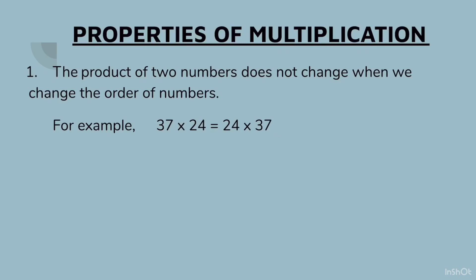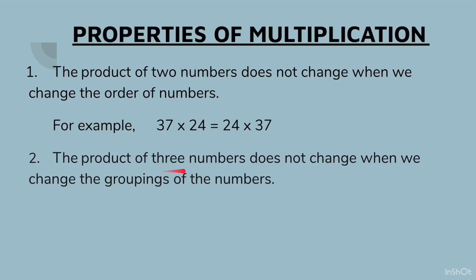Second property: the product of three numbers does not change when we change the grouping of the numbers. Let us take an example: 29 × (4 × 7). This means first we will multiply 4 × 7 and then that answer we will multiply with 29. On the right side we have (29 × 4) × 7. Here first we will multiply 29 × 4 because that is given in a bracket, and then that answer we will multiply by 7. So irrespective of the order we will get the same answer.